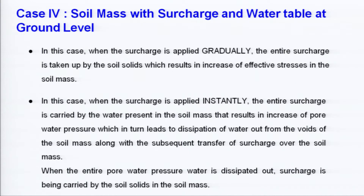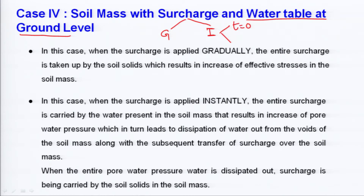Now we take Case 4: the soil mass with a surcharge and water table at ground level. When surcharge is applied instantly, we look at two time intervals — at t = 0, the moment the surcharge is applied, and at some later time t. When applied gradually, we also examine what happens differently.